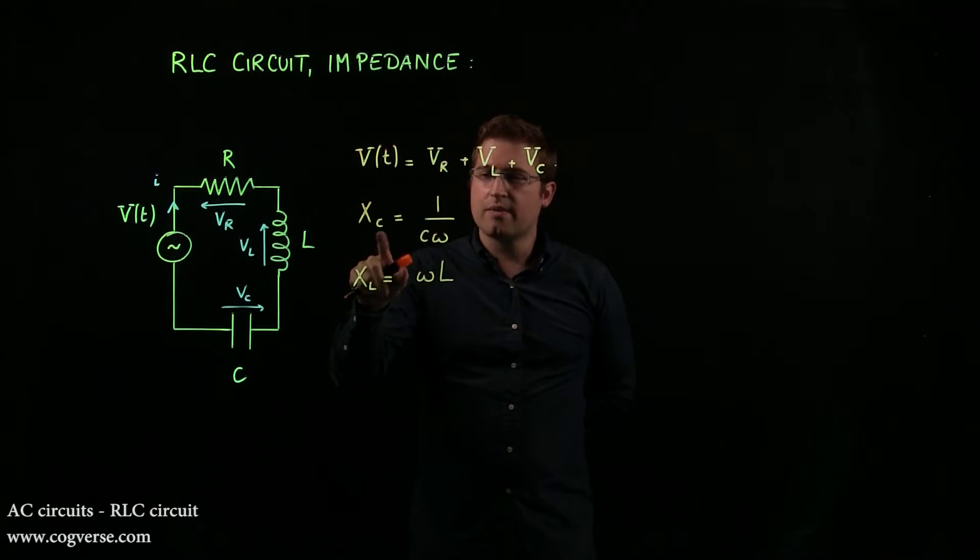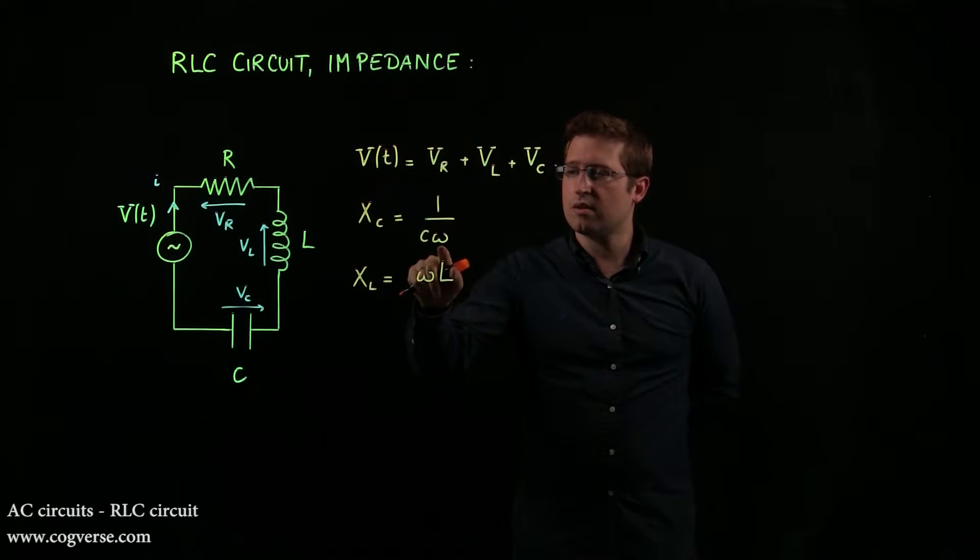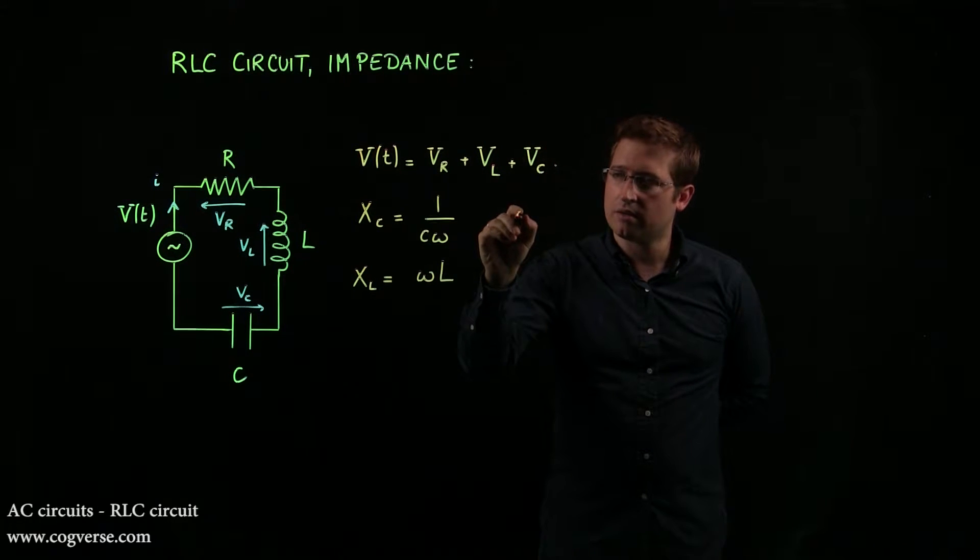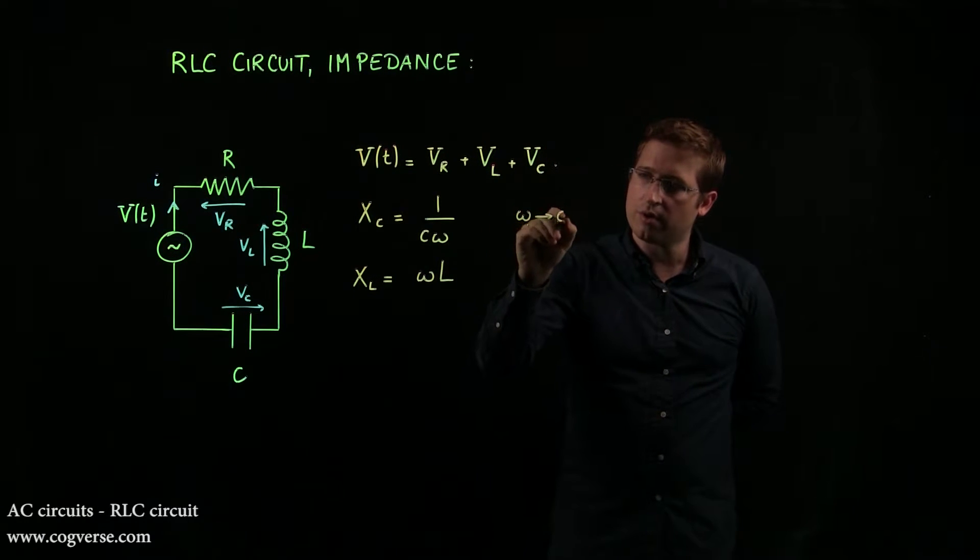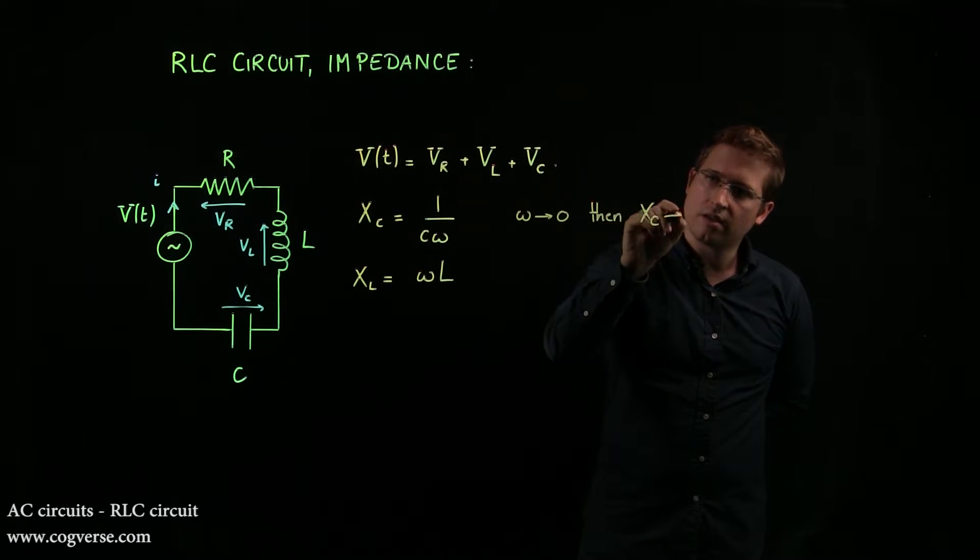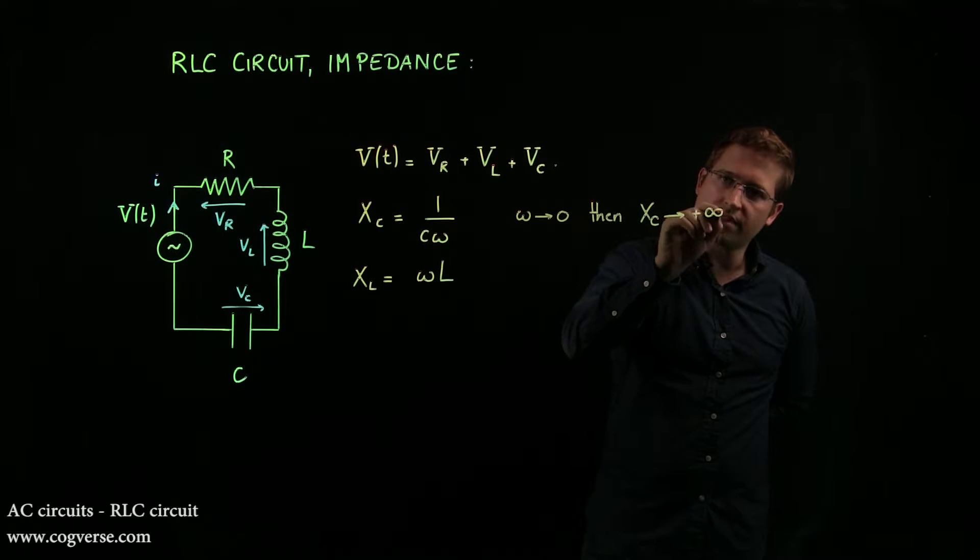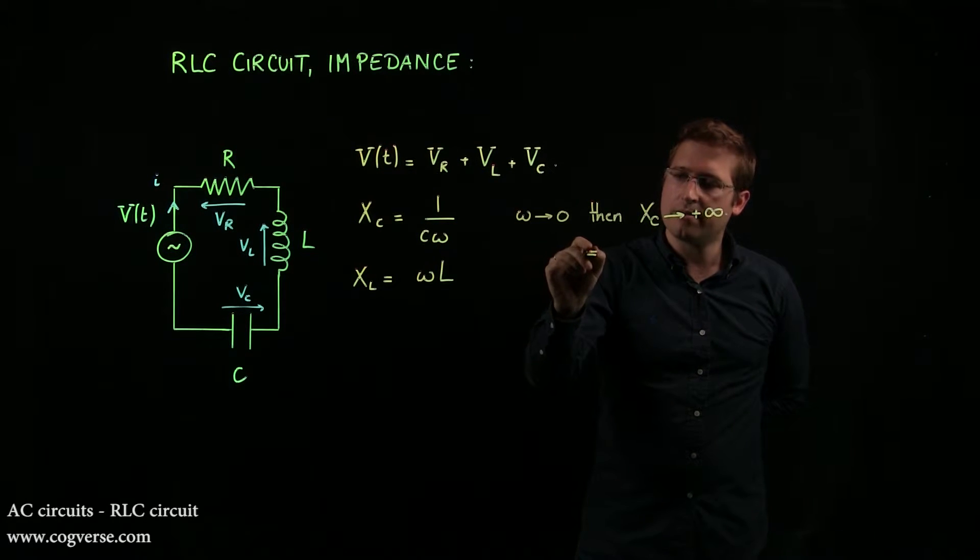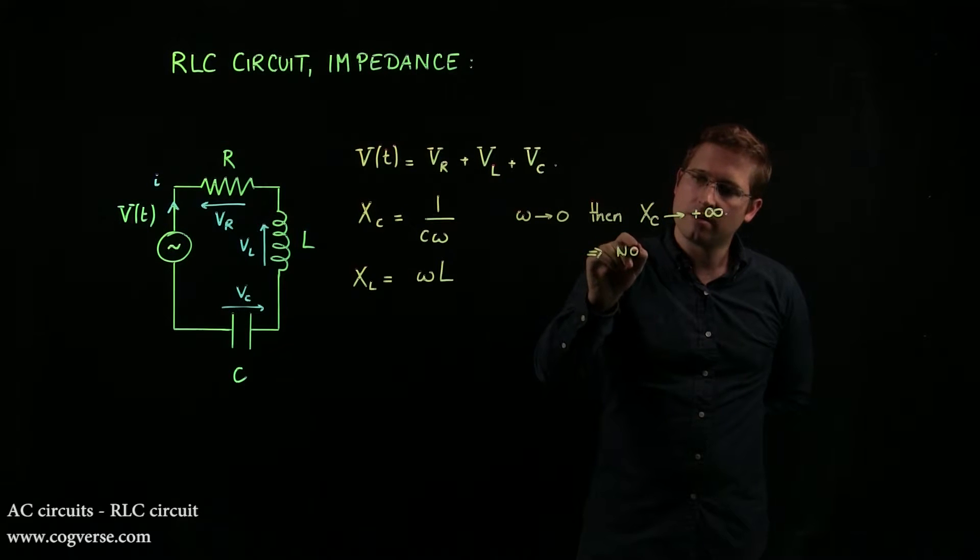Now here, what it means is that if omega gets very small, if omega goes to 0, then Xc goes to plus infinity. And that implies no current.